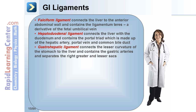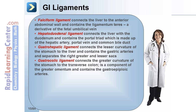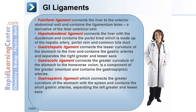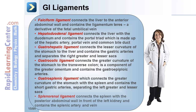The gastrohepatic ligament connects the lesser curvature of the stomach to the liver and contains the gastric arteries, separating the right greater and lesser sacs. The gastrocolic ligament connects the greater curvature of the stomach to the transverse colon; it is a component of the greater omentum and contains the gastroepiploic arteries. The gastrosplenic ligament connects the greater curvature of the stomach with the spleen and contains the short gastric arteries. The splenorenal ligament connects the spleen with the posterior abdominal wall in front of the left kidney and contains the splenic artery and vein.